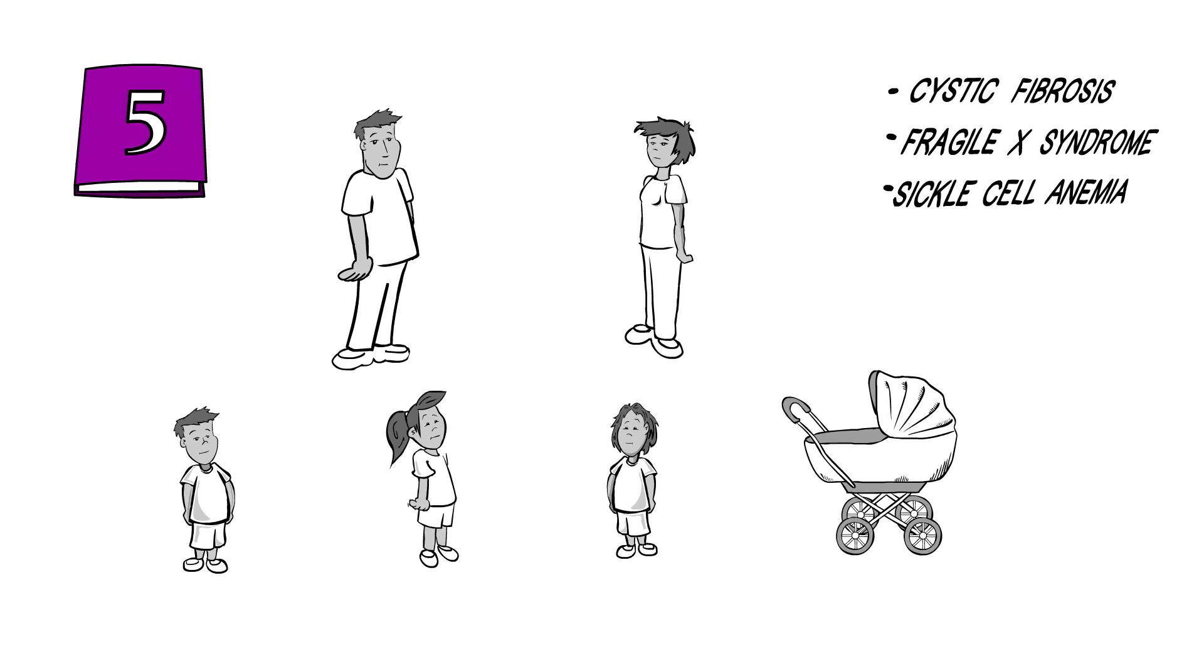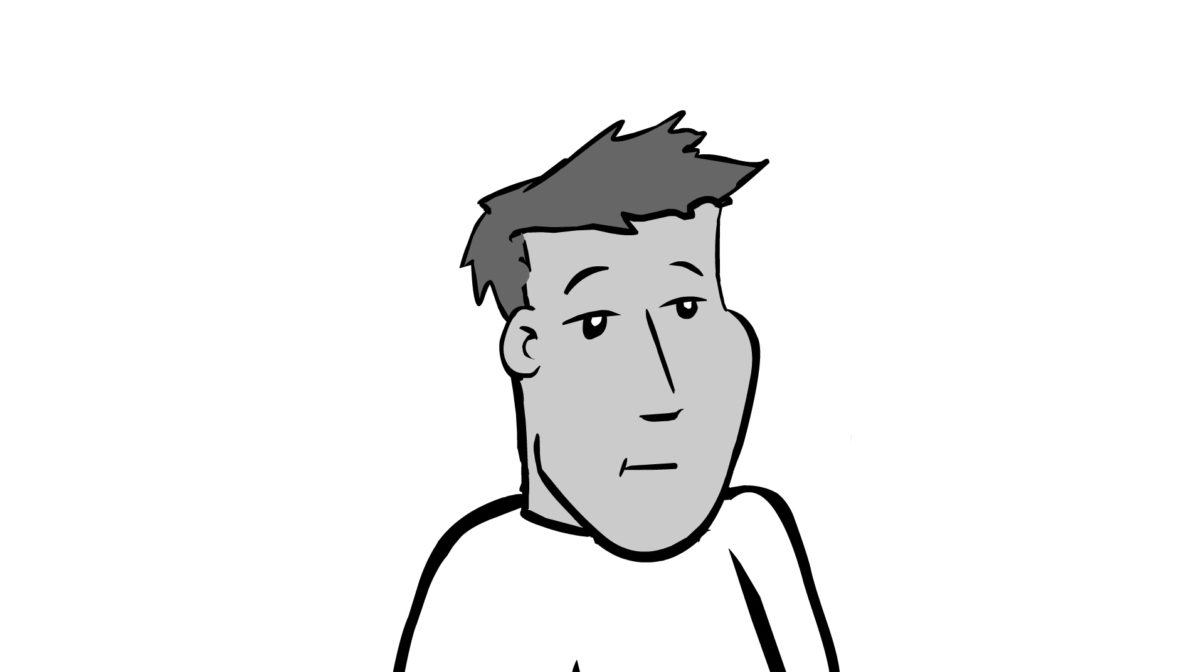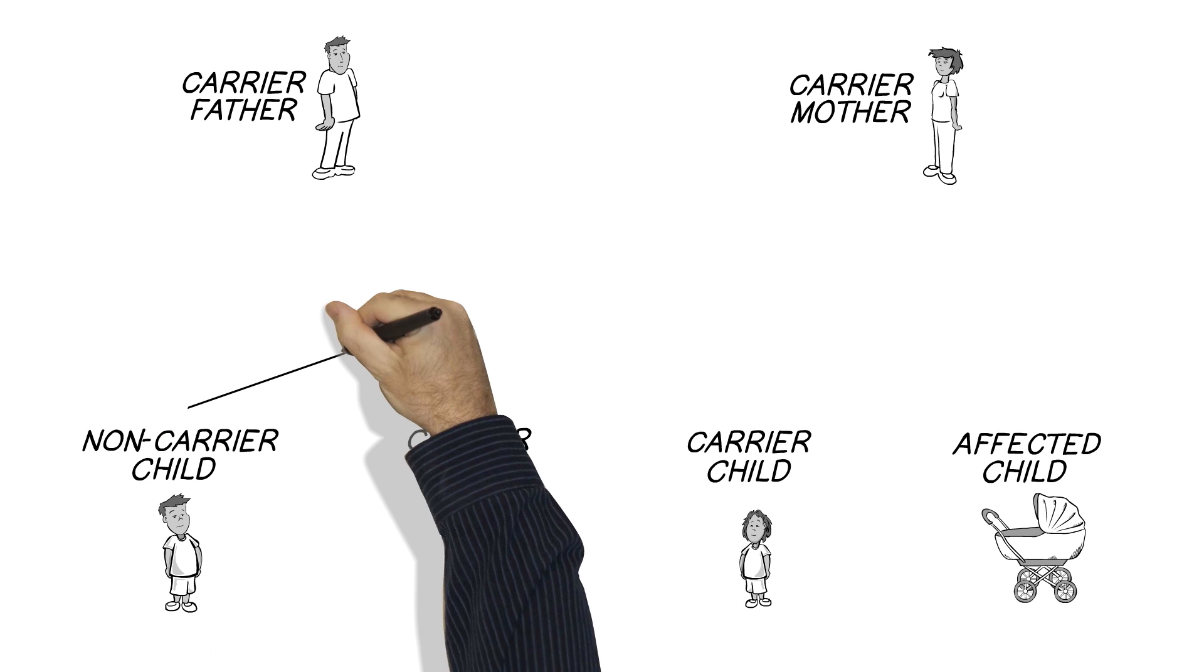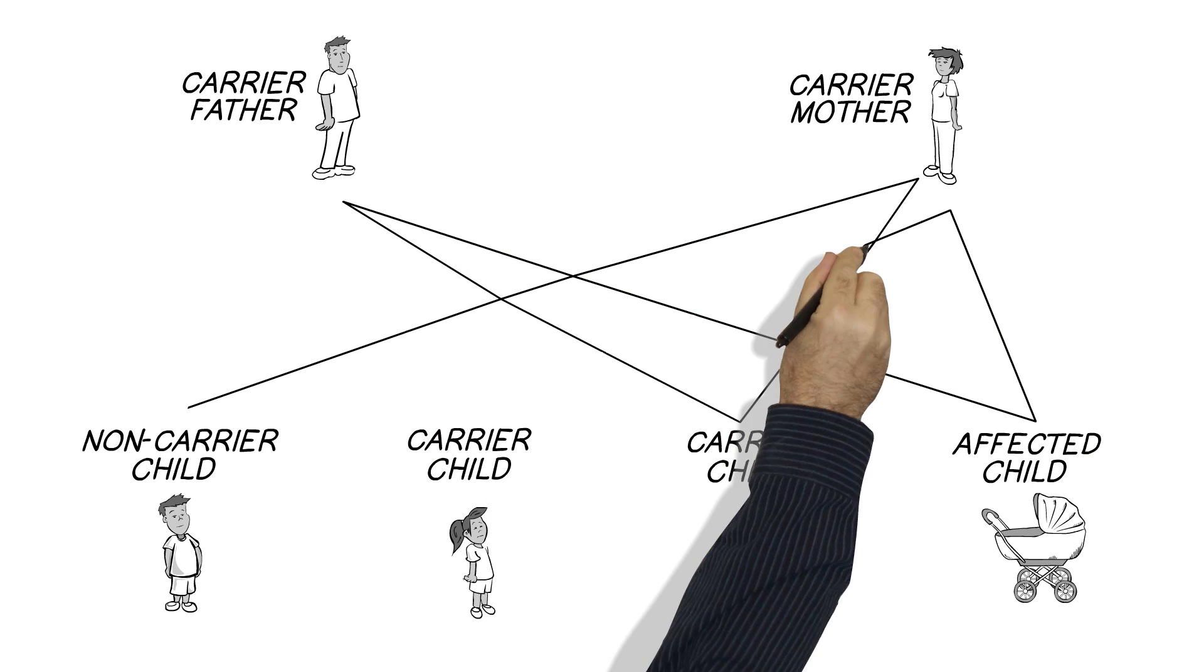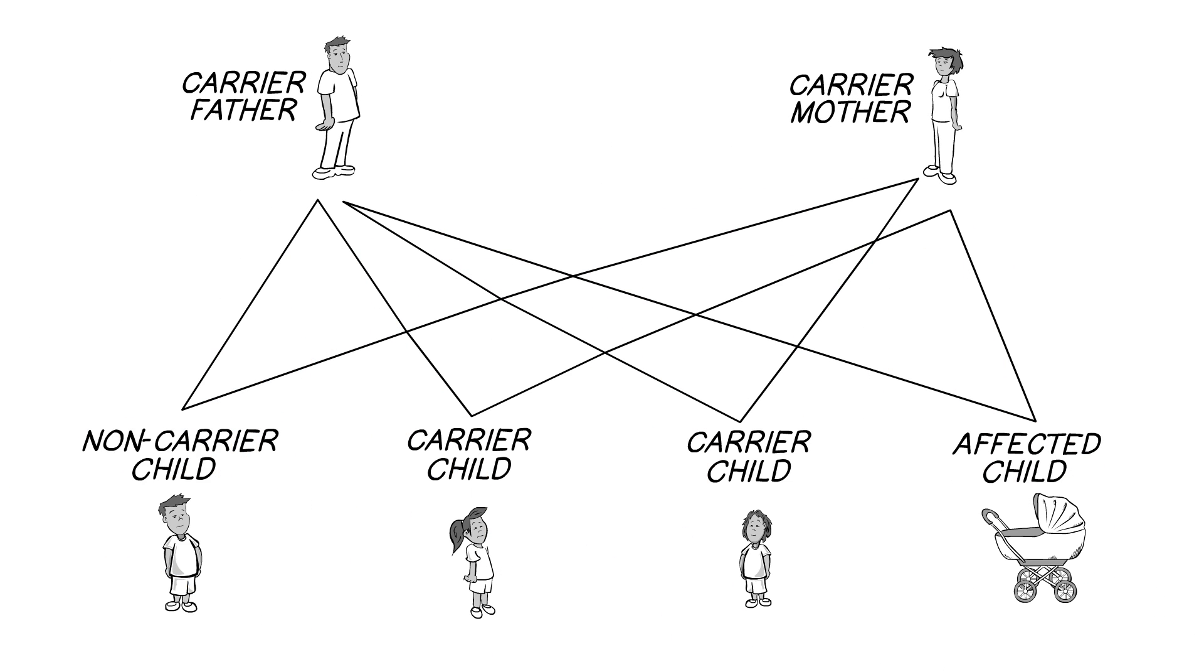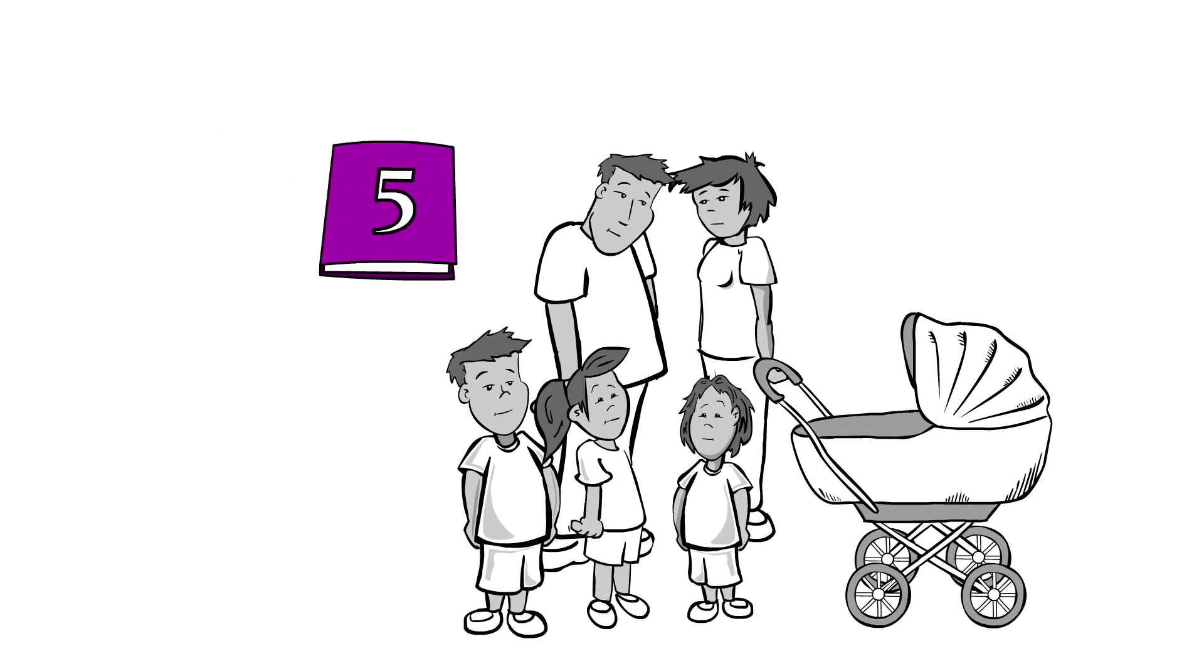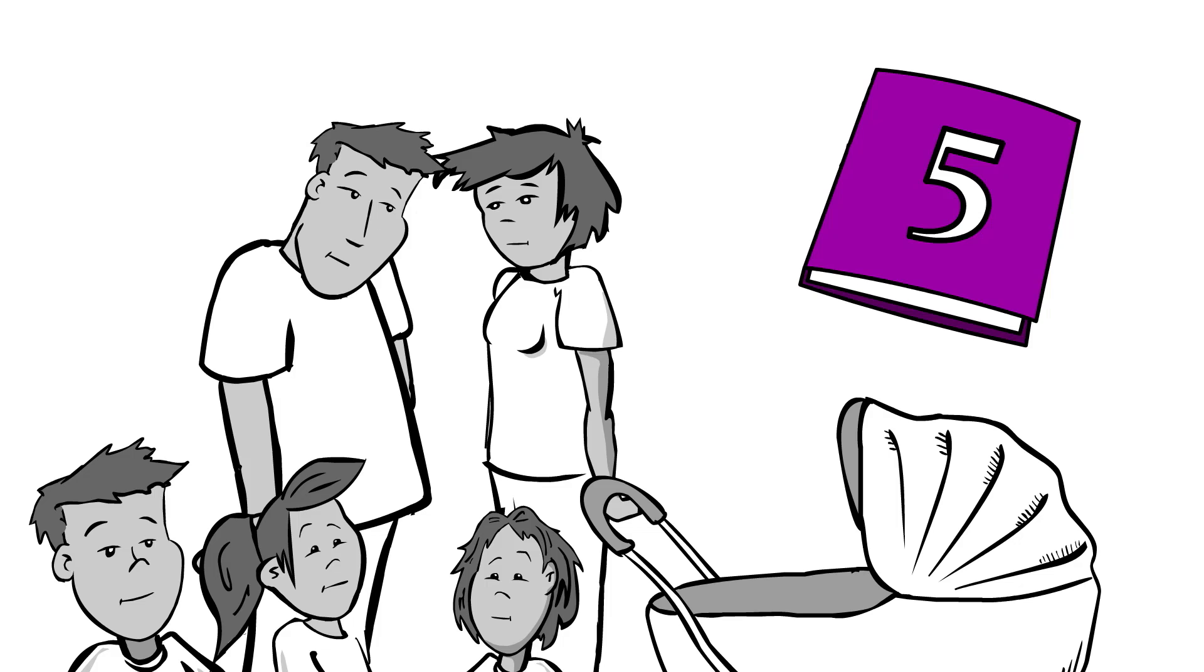There are exceptions, but typically how this works is if a person who carries these genes gets together with another person who also carries the same gene, their kids have a higher risk for developing these types of illnesses, many of which don't have cures. So this category is about whether you want to know risks for future children, not necessarily about your own health.